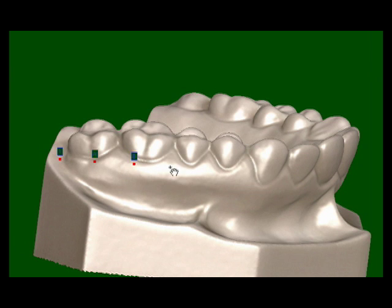The perimeter of the splint is defined by clicking a series of points on the model.